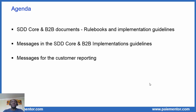The four-corner model is of interest here because it allows us to see clearly the spaces where the different messages are exchanged and the parties that exchange them. We'll list all the messages provided in the SDD core and B2B implementation guidelines. Many people stop here, and that's already good, but it is not sufficient. There are other messages not mentioned in the SDD core and B2B implementation guidelines, but that banks send to their customers.